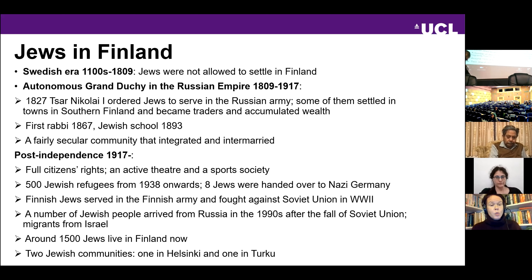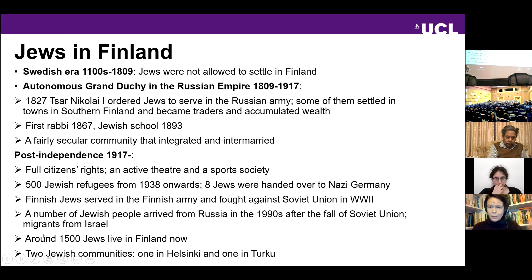A number of Jewish people arrived from Russia in the 1990s after the fall of the Soviet Union, and there have been more recent migrants from Israel. The community has always been very small — about 1,200 in Helsinki — and is a very heterogeneous group. All together it's around 1,500, with two Jewish congregations: one in Helsinki and one in Turku.